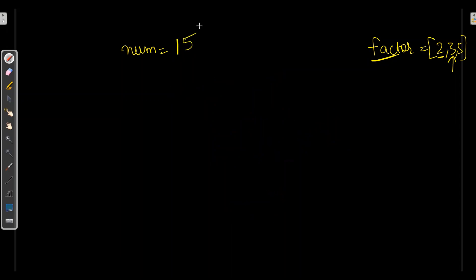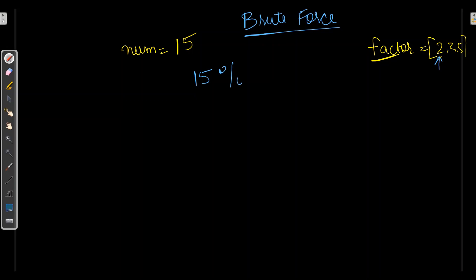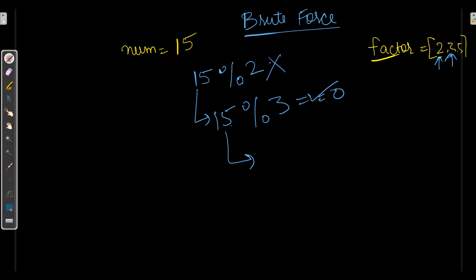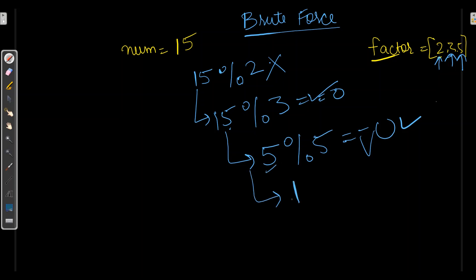Let's check whether 15 is an ugly number or not. Here, this is a brute force solution. Where I have number 15. First, I will take factor 2 and check: is 15 divisible by 2? No. So we will take the other factor 3. Is 15 divisible by 3? Yes, we got remainder 0. After dividing 15 by 3, we got 5. Now we will check the next factor: is 5 divisible by 5? Yes. After dividing 5 by 5, we got 1. So we can say 15 is completely divisible by these factors. 15 has the prime factors 3 and 5. Hence, 15 is an ugly number.